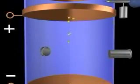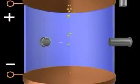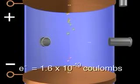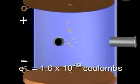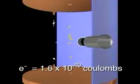Millikan was able to determine that the charges on the droplets were all multiples of a smallest value, 1.6 times 10 to the minus 19th coulombs. He took this to be the charge on a single electron.